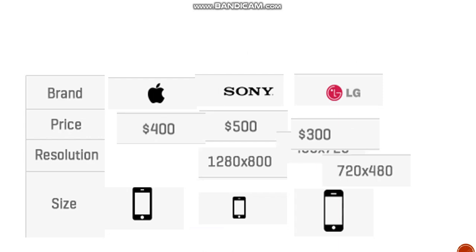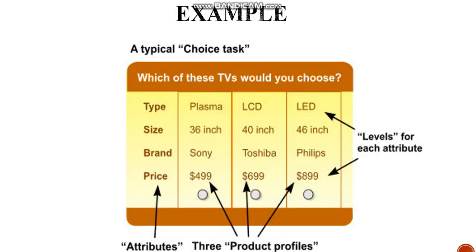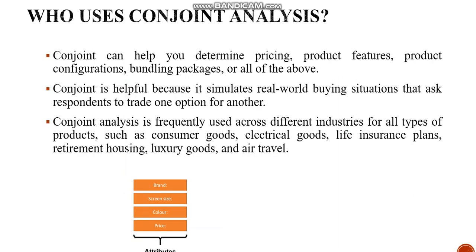So different prices for Apple, different prices for Sony, different resolutions, and different screen sizes — these combinations are presented to customers, who then provide ratings. Based on those ratings, importance is assigned to each combination. For example, which TV would you choose — plasma, LED, LCD, or 4K? Type, size, brand, and price are your attributes, while plasma, LCD, and LED are your levels.